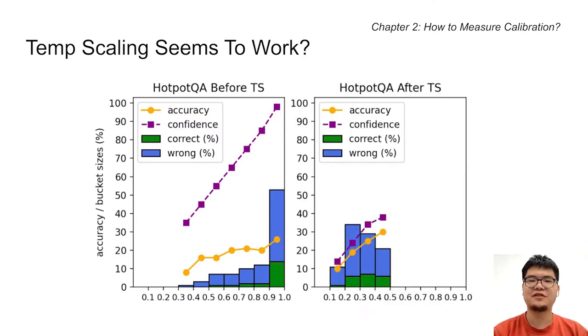On the right figure, after the temperature scaling, most predictions are assigned similar confidence from 0.1 to 0.5. Moreover, when many predictions are clustered in the same bucket, it causes the cancellation effect, ignoring the instance level calibration error.